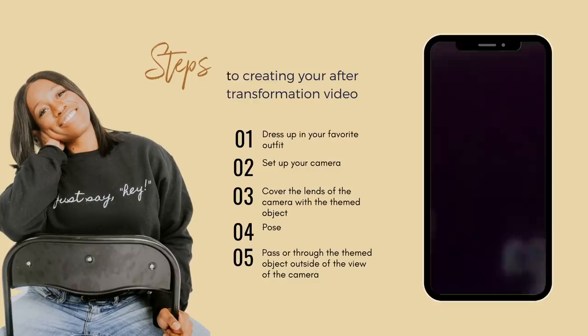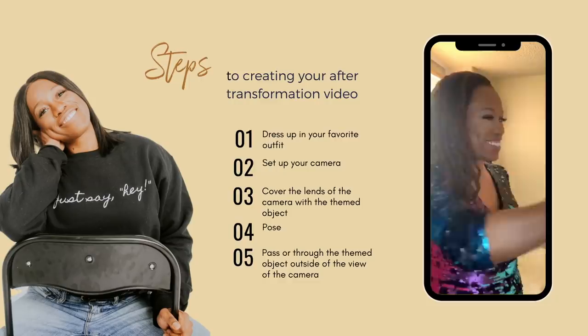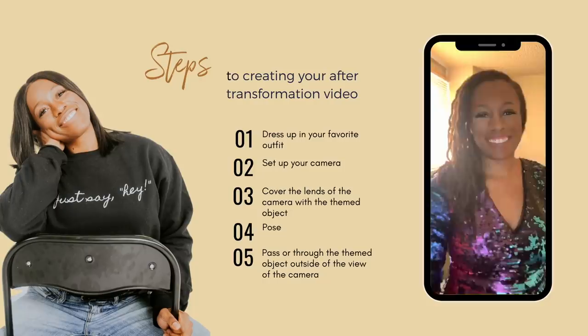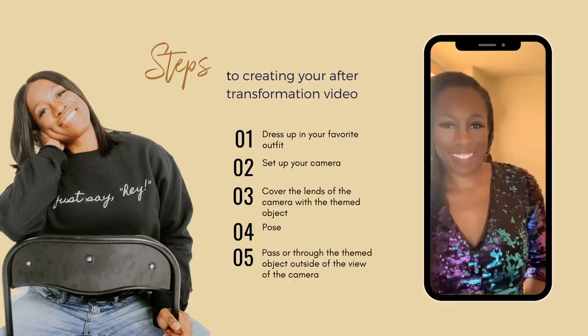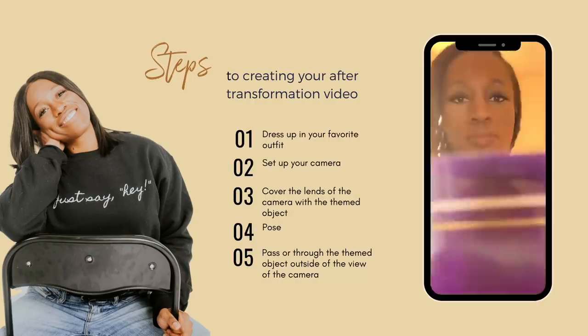Now here is how you're going to record your transformation video. You're going to set up the camera, cover the lens with your object, then pose and smile — this is the time to show off yourself. Then you're going to pass it. I recorded it a few times to choose my favorite. One time I threw it and it hit me on my chest, but the beauty of editing is that you can edit the part before it hits your chest so it just looks like you're throwing it up in the air.